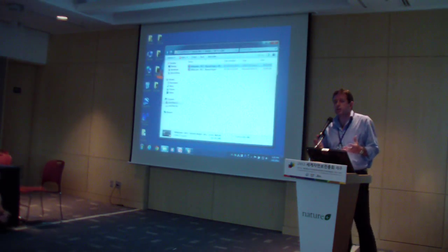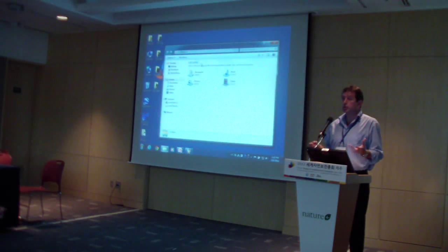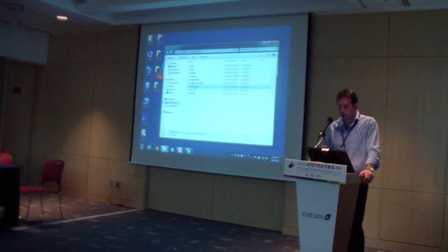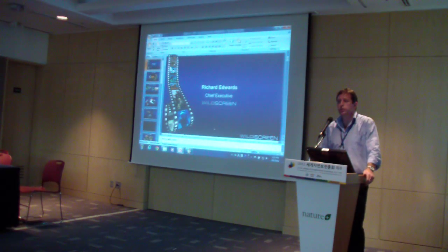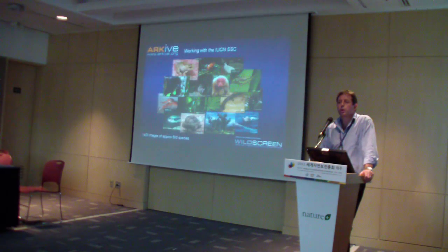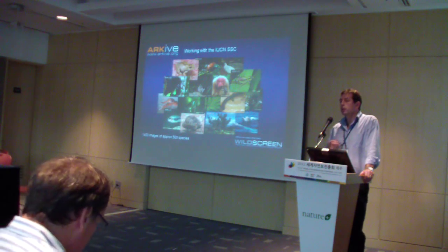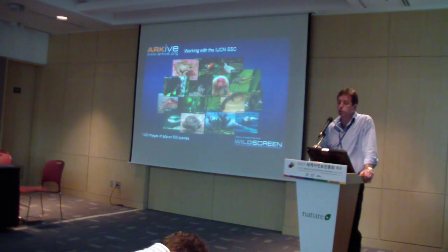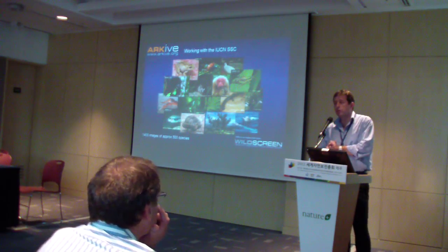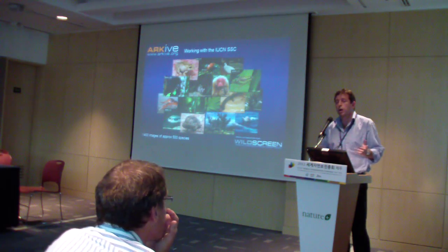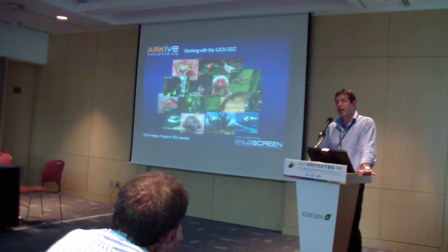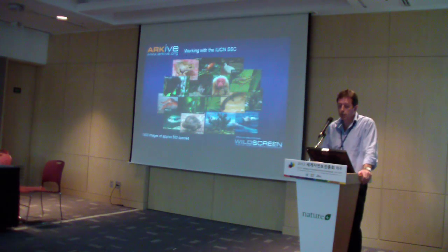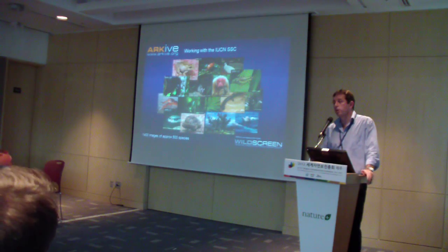ARKive is bringing together the world's best wildlife films and photographs on the world's species, prioritizing those on the IUCN Red List of Threatened Species. We're storing them at high resolution offline for the benefit of future generations — so in 25, 50, 100 years' time there's a digital media record of what life was like at the beginning of the 21st century. So far we've profiled over 15,000 of the world's species, and last year the ARKive website received over 10 million visits from all around the world.